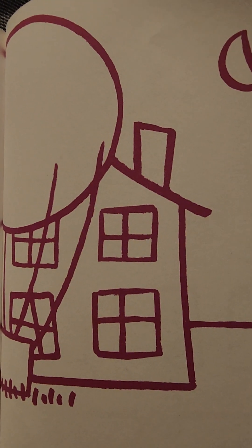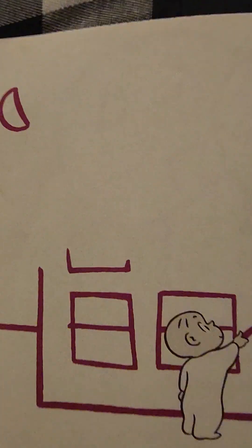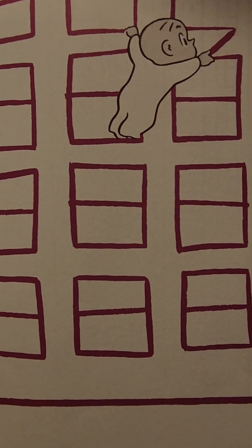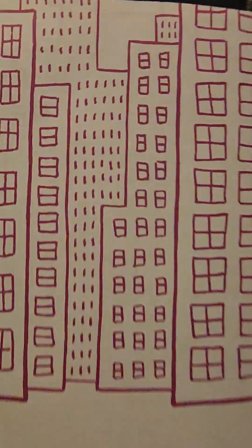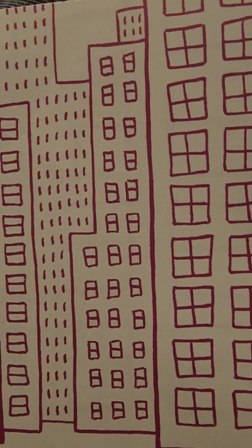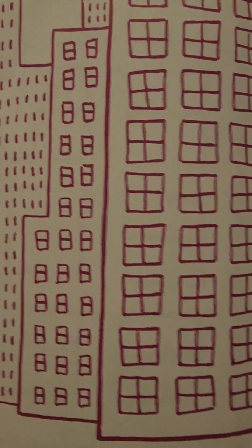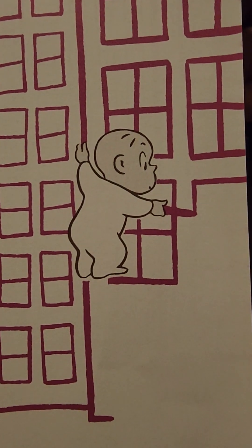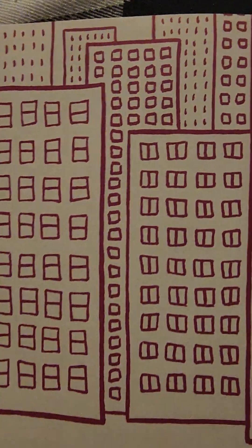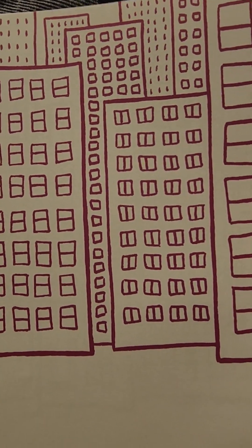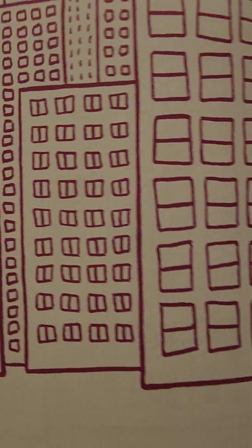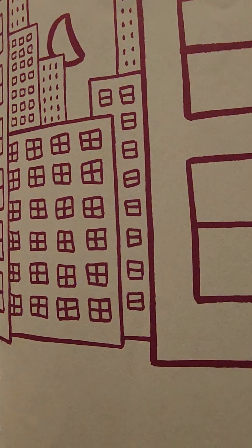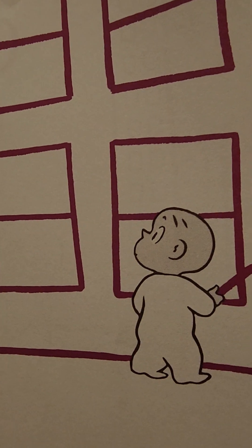He tried to think of where his window ought to be, so he made some more windows. And he made a big building full of windows. He made lots of buildings full of windows. He made a whole city full of windows. Look at Harold, he is such a good artist. But none of the windows was his window. He couldn't think of where it might be. Look, he's thinking.